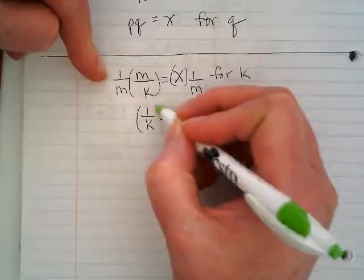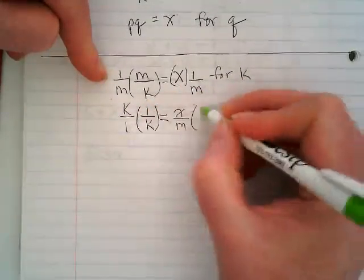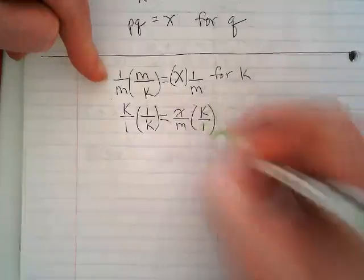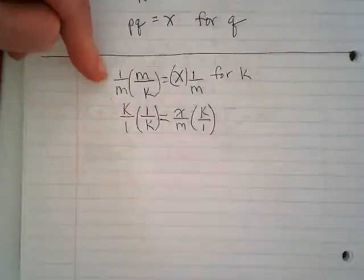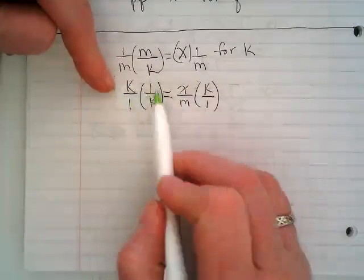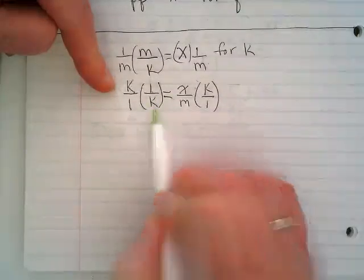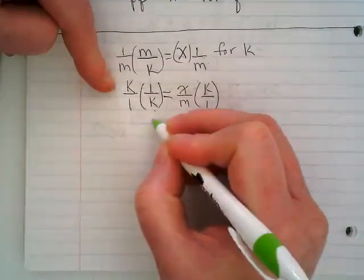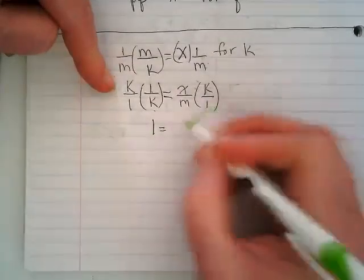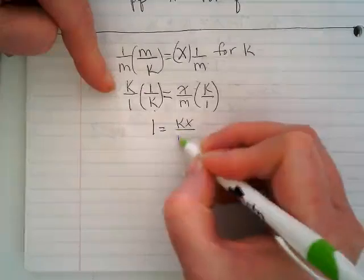So I'm going to multiply it by the reciprocal and this is where this gets really challenging because now I have to do it on both sides and now the k is on the right side of the equation. So k over 1 is equal to 1 over k. That gives us 1 equals kx over m.